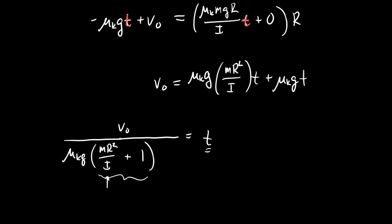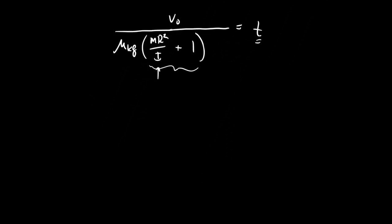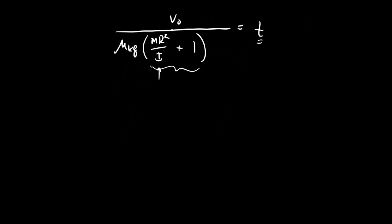No matter what I put in for I, everything in here is just going to be some number. Because if I put in m r squared for I, that would be the hoop, then that will just be 1 plus 1 equals 2. And if I put in, say, 2 fifths m r squared in there, the m r squared will cancel, and I'll just get 5 halves plus 1. It does tell me which one takes longer to get there. So which shape do you want to put in? Put in a hoop, this becomes v-naught over 2 mu-K g.